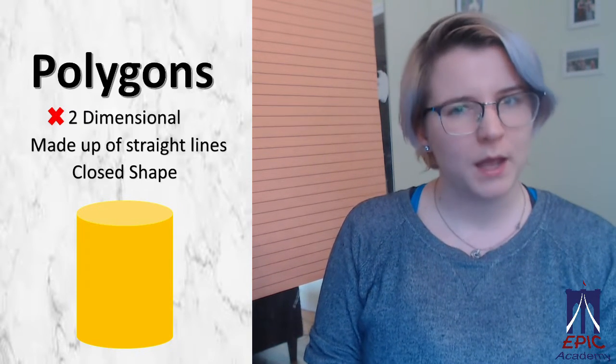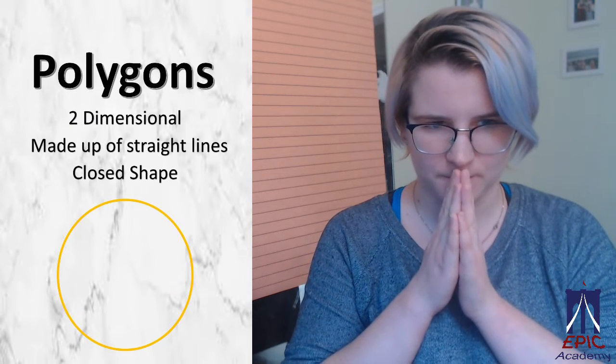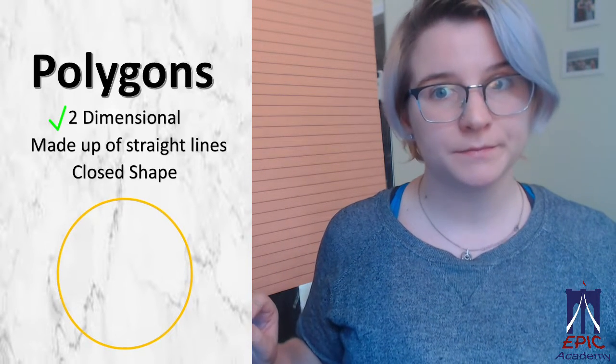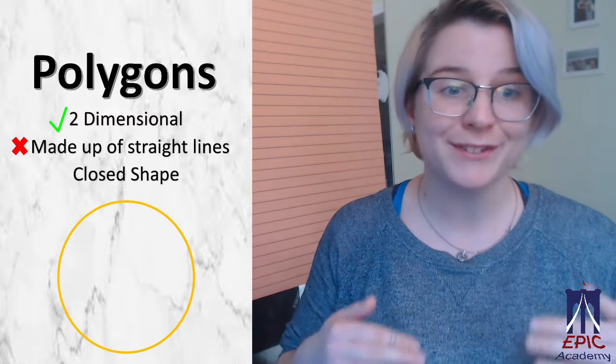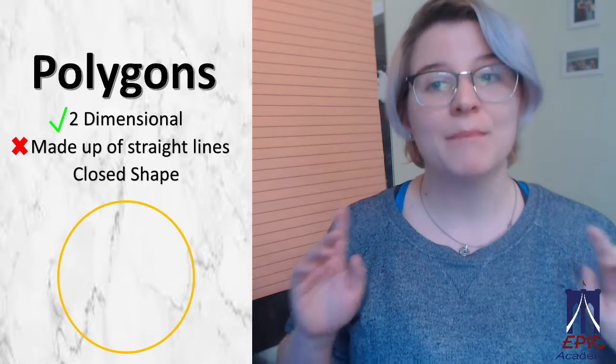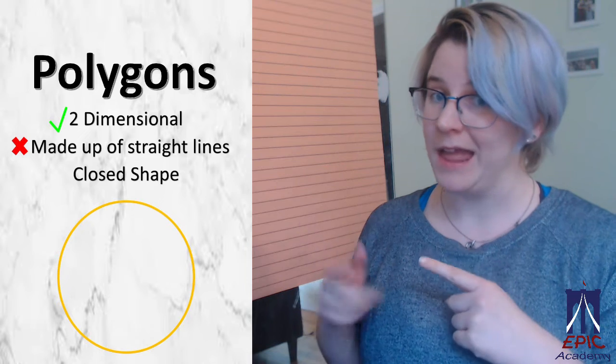So what about that? Well, let's go through our checklist. It is two-dimensional. Is it made of lines? Nope. A circle has no straight lines. Polygons have straight lines. So this? Not a polygon.